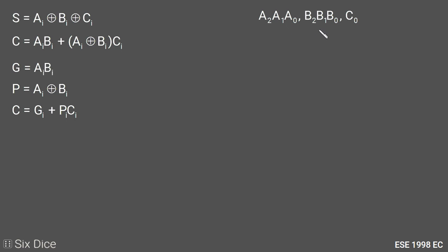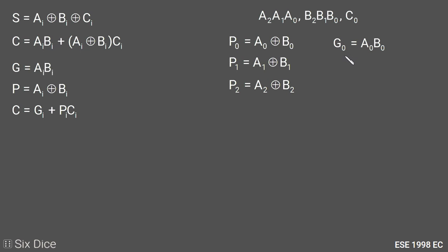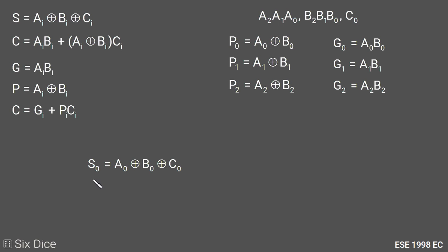At the start we have A2, A1, A0, B2, B1, B0, and initial carry C0. The carry propagation terms are: P0 = A0 XOR B0, P1 = A1 XOR B1, P2 = A2 XOR B2. The carry generation terms are: G0 = A0 AND B0, G1 = A1 AND B1, G2 = A2 AND B2.